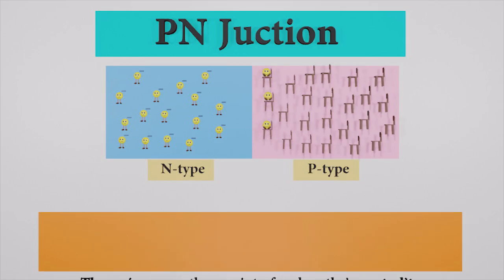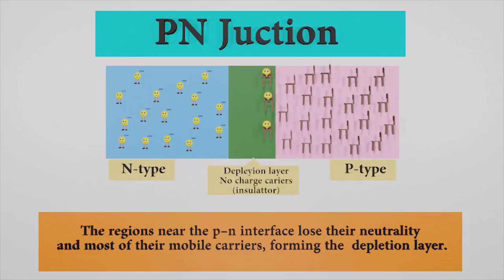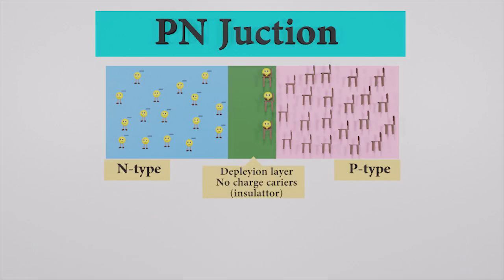The region near the PN interface loses their neutrality and most of their mobile carriers, forming the depletion layer. The depletion region has no charge carriers and acts as an insulator.